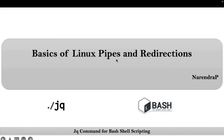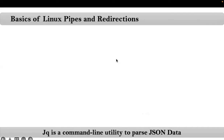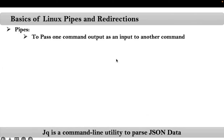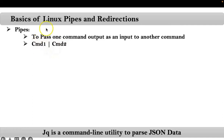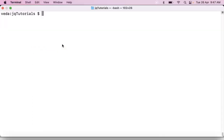Friends, here we are talking about basics of Linux pipes and redirections. These two concepts are very important to practice with the jq command. Linux pipes are useful to pass or provide one command output as an input to another command. The simple syntax is: command1 | command2, meaning command1's output is passed as input to command2. Let me explain this on the command line.